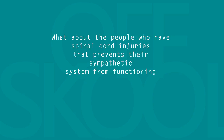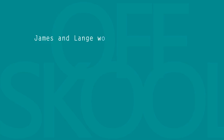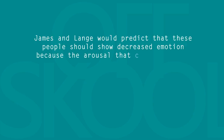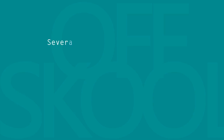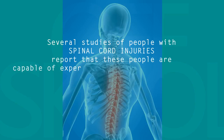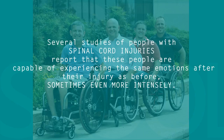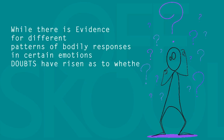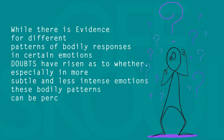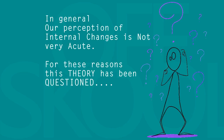But what about people who have spinal cord injuries that prevent their sympathetic system from functioning? Although James and Lange would predict that these people should show decreased emotion because the arousal that causes emotion is no longer there, this in fact does not happen. Several studies report that people with spinal cord injuries are capable of experiencing the same emotions after their injury as before, sometimes even more intensely. Also, while there is evidence for different patterns of bodily responses in certain emotions, doubts have arisen as to whether, especially in more subtle and less intense emotions, these bodily patterns can be perceived. In general, our perception of internal changes is not very acute. For these reasons, this theory has been questioned.